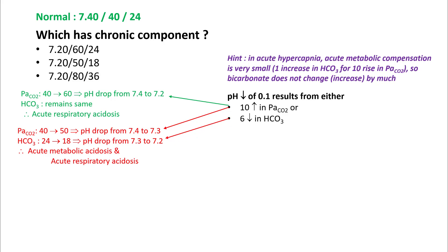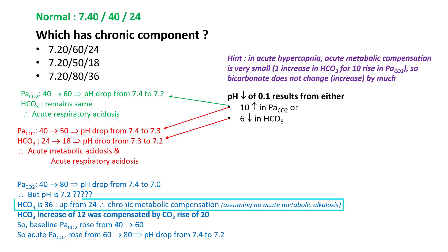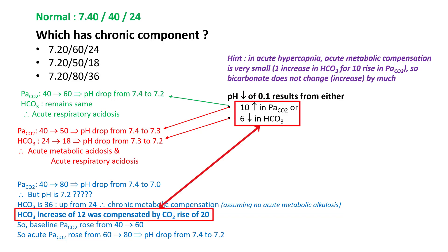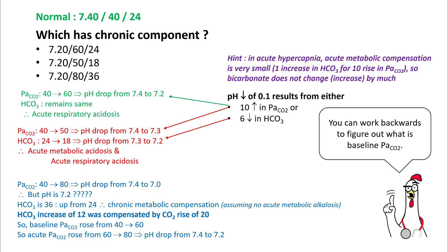So this patient likely has acute metabolic acidosis and acute respiratory acidosis. The third ABG with a PaCO2 of 80: a rise in CO2 by 40 points should drop your pH from 7.4 to 7.0, but your pH in fact is only 7.2. Looking more carefully, your bicarb is 36, up from the normal of 24. So this patient likely has chronic metabolic compensation. A bicarb increase of 12 is compensated by a carbon dioxide rise of 20, so this patient's baseline CO2 rose from 40 to 60 from chronic compensation, and acute CO2 rose from 60 to 80, dropping pH from 7.4 to 7.2. So ABG number three has both acute and chronic respiratory acidosis.